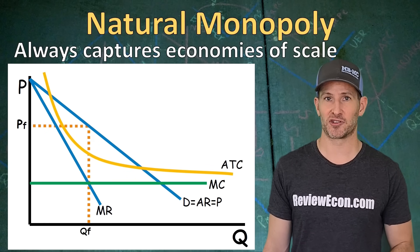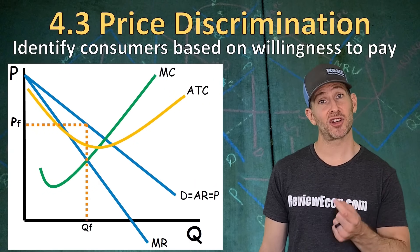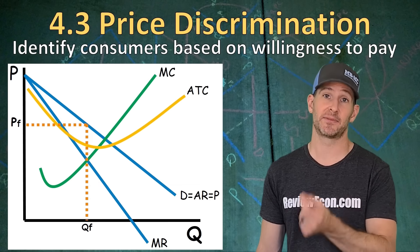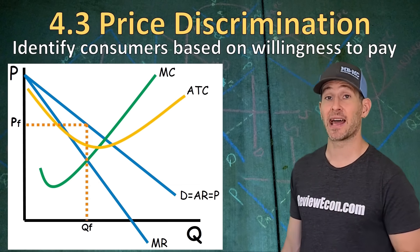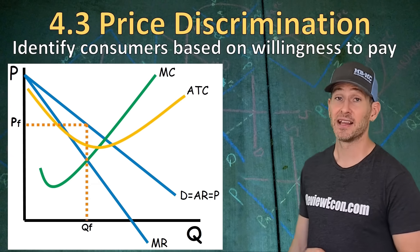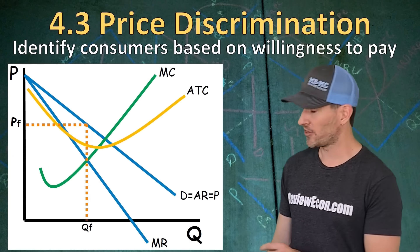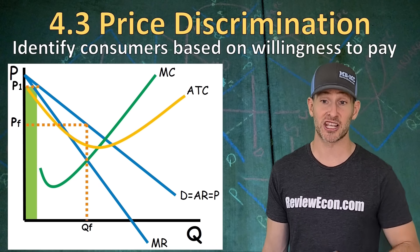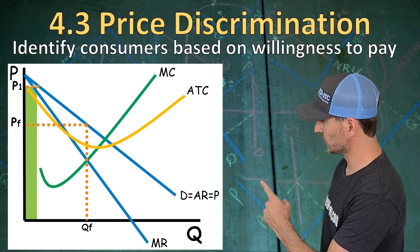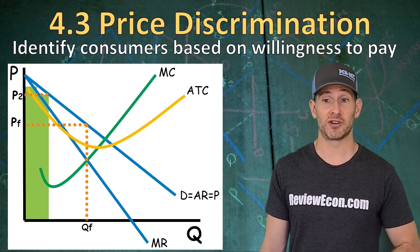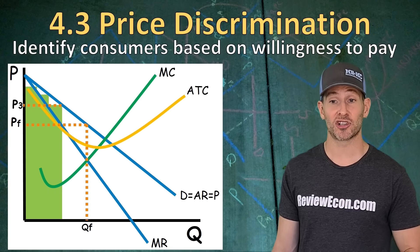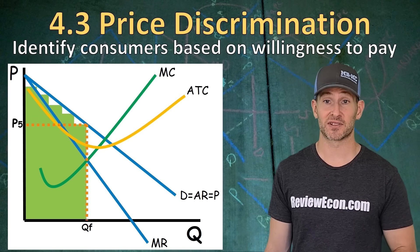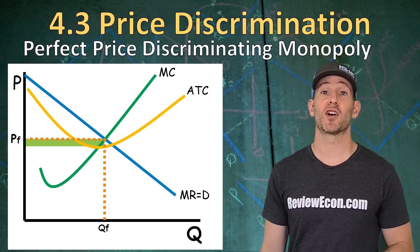Some monopolies are able to price discriminate if they can determine the customer's willingness to pay. In order to price discriminate, they need to figure out which customers are willing to pay high prices and which ones demand lower prices. The demand curve tells us that some units can be sold at higher prices. PF is what a single price monopoly would charge, but those first few units could be sold for more at P1. If the firm can identify those people and charge them P1, they will be making more profit. The next group, P2 is the maximum price those units can be sold for. Continuing on, the firm can actually charge different amounts for different units of output, turning consumer surplus into profit.